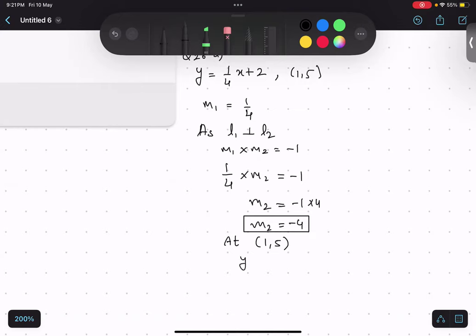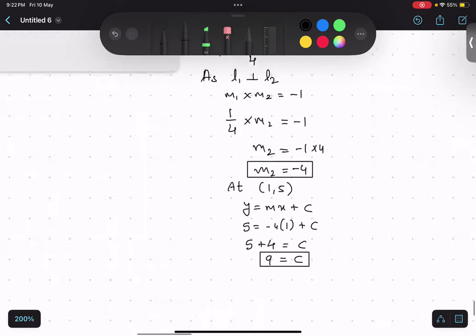So, we know that y equals to mx plus c, y value is 5, m value is minus 4, x value is 1 plus c. Quickly solve using n-solve, plus 4 equals to c, 9 equals to c. So, we got c value as 9. I will write equation y equals to m value is minus 4 x plus 9.